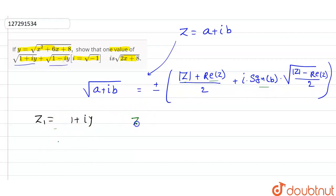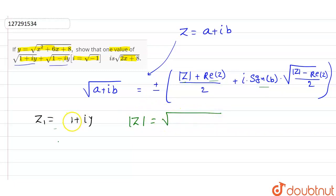Mod Z — Mod Z is equal to root over A² plus B². So Mod Z is equal to root over A² plus B².